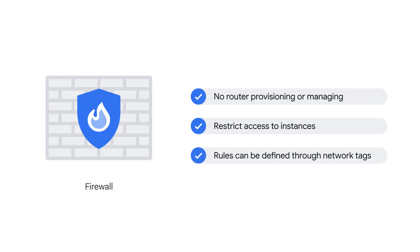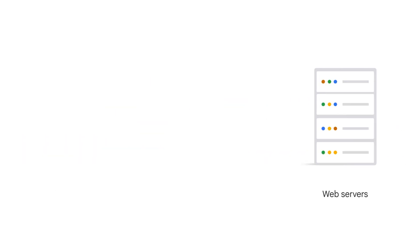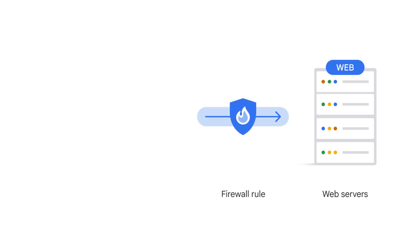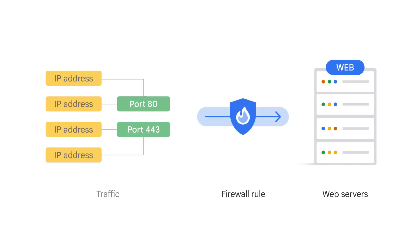Firewall rules can be defined through network tags on Compute Engine instances, which is super convenient. For example, you can tag all your web servers with 'web', and write a firewall rule saying that traffic on ports 80 or 443 is allowed into all VMs with the web tag, no matter what their IP address happens to be.